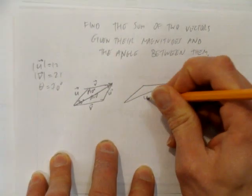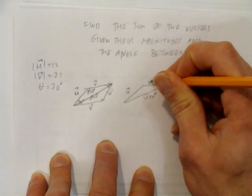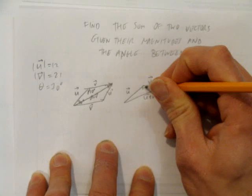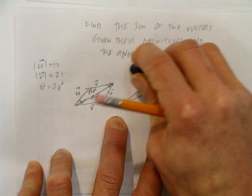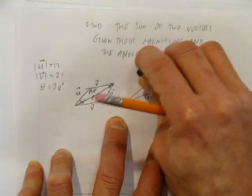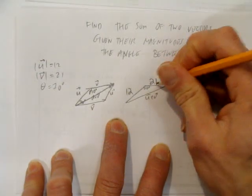Once again, this is vector u plus vector v, this is vector u, this is vector v. The angle in here is 110 degrees. In this diagram, I don't really want to call it u. I want to look at the actual numbers. This will be my magnitude of 12 and my magnitude of 21.